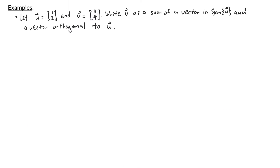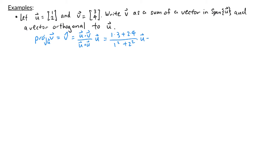In the first example, u equals the vector (1, 2) and v is the vector (3, 4). We're asked to write v as a sum of a vector in the span of u and a vector orthogonal to u. The projection v-hat equals (u dot v / u dot u) times u. Here u dot v is 1×3 + 2×4, divided by 1² + 2², times u. That's (3 + 8) / 5 times u, which is 11/5 times (1, 2), giving v-hat = (11/5, 22/5).